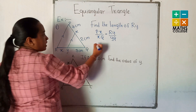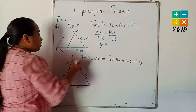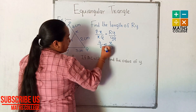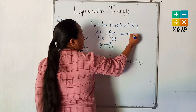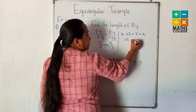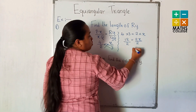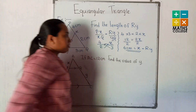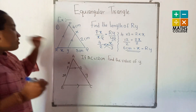The length of PX is 4 cm, XQ is 2 cm, RY is X, and YQ is 3. Using cross multiplication: 4 multiplied by 3 equals 2 multiplied by X, so 12 equals 2X. Dividing by 2, X equals 6 cm. So X is the length of RY. First write the relationship according to the theorem based on the figure.